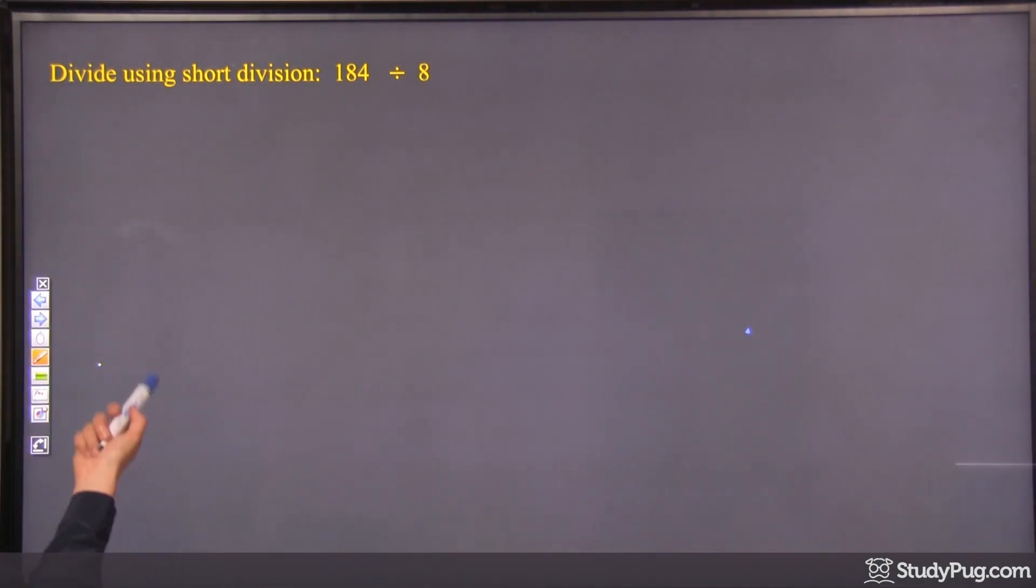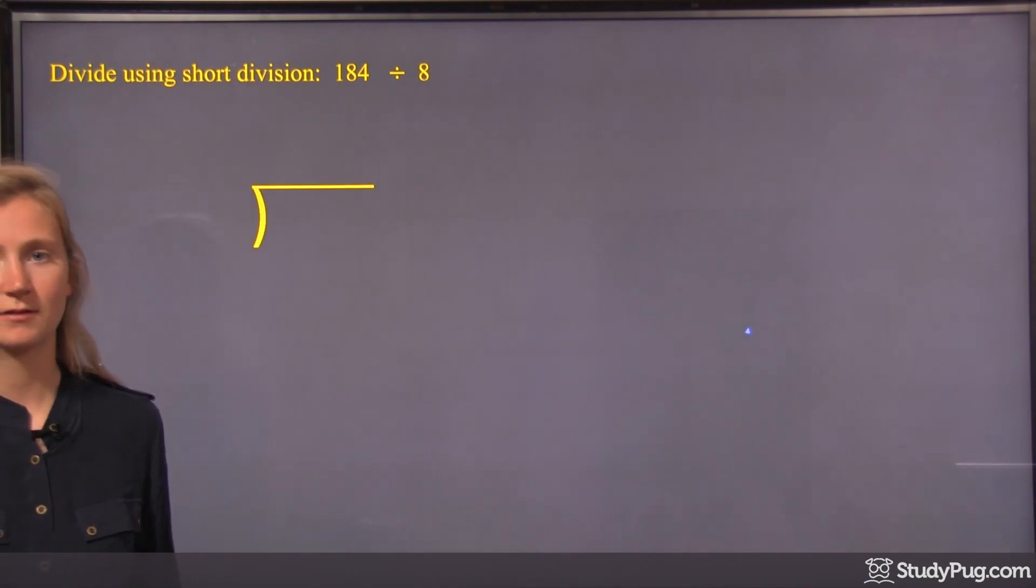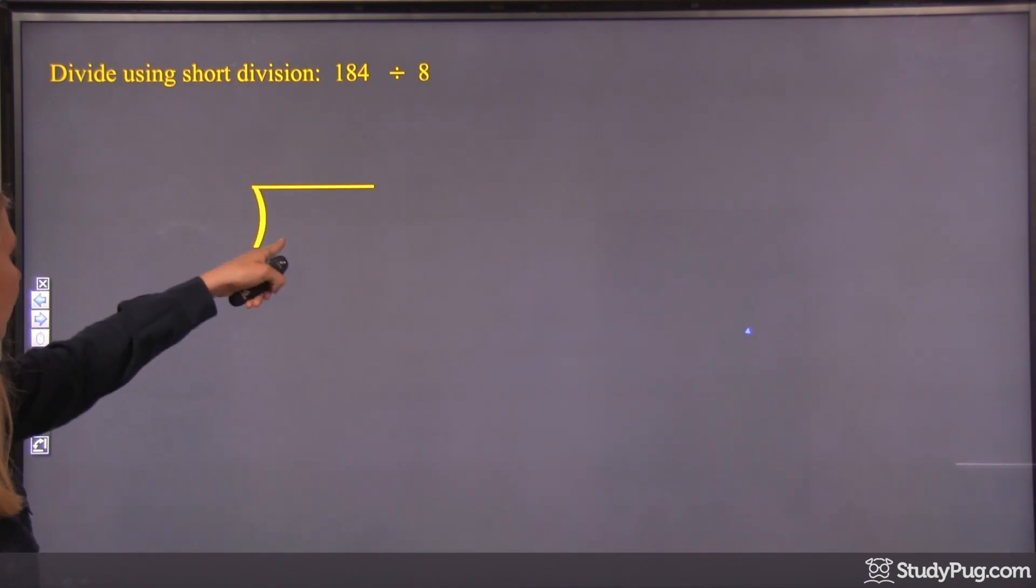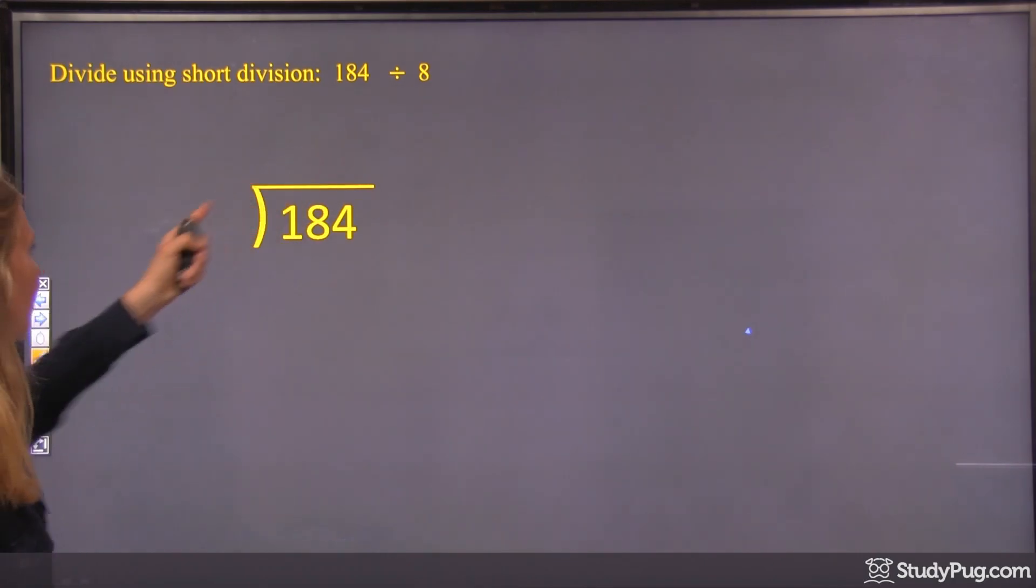So short division, we use the same box as we used in long division. And remember that the dividend goes inside the box and the divisor goes outside the box.